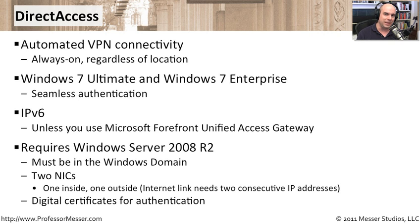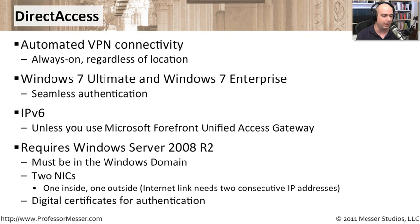Direct access also requires Windows Server 2008 R2 — that's a pretty specific configuration. It needs to be in a Windows domain to work properly, and it must have at least two network interface cards. One of those NICs is on the inside in your corporate network, and the other is on the outside on the internet side. For that outside connection, we need two consecutive IP addresses associated with that single network interface card.